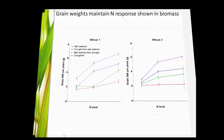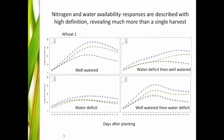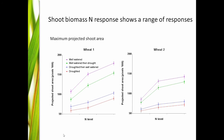These are the grain weight results from that experiment for just two wheat lines. You can see the three nitrogen levels, and there's a nitrogen response. That response is lower under high drought than when well watered. In terms of grain yield, the plants that were well watered and then had water deficit had higher biomass, but when you look at grain yield they couldn't convert that biomass into actual yield.